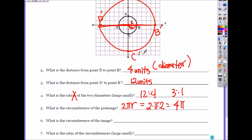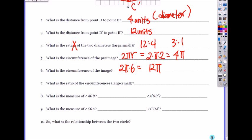What is the circumference of the image? What's the radius of the image? 6. So it's 2πr, which is 6. So you get 12π. So again, what is the ratio of the circumference? Large to small. 12π to 4π, which is again 3 to 1. Are they the same? That means what? They are proportional.